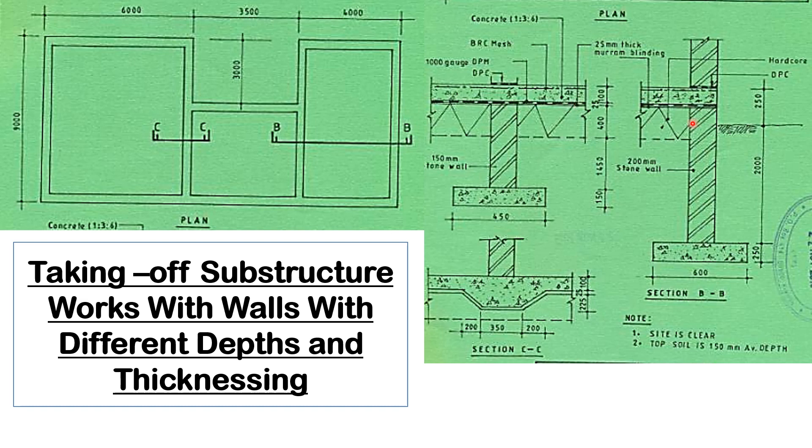This is the thickening which is at section CC, meaning that from here to here this wall has been thickened, but this one has a different foundation from the rest of the external wall.